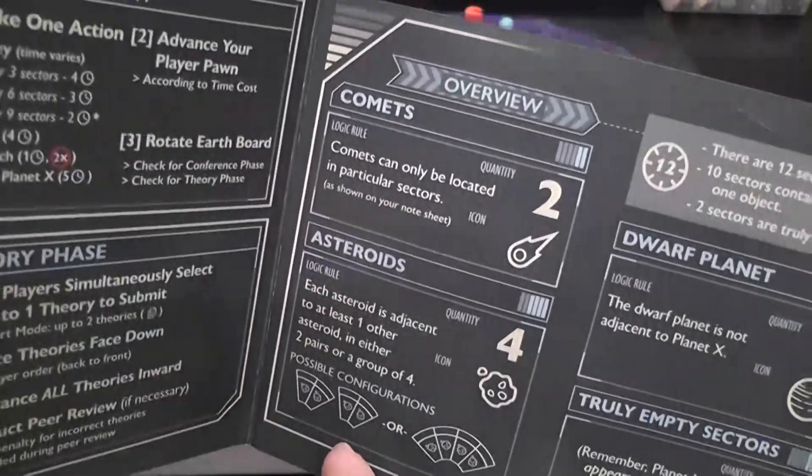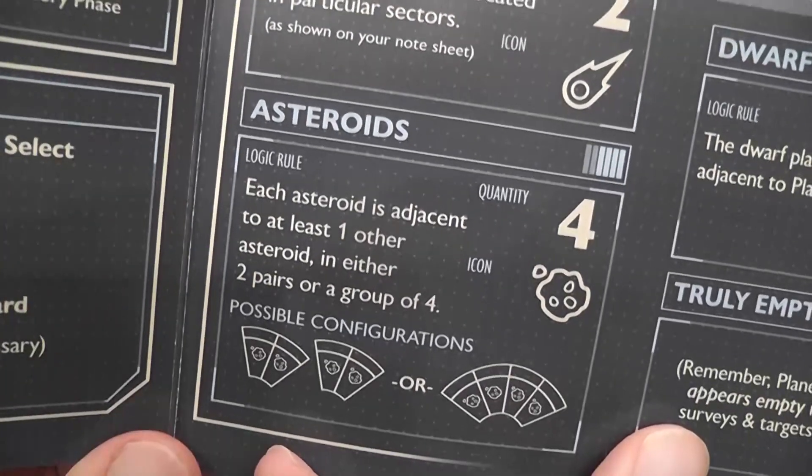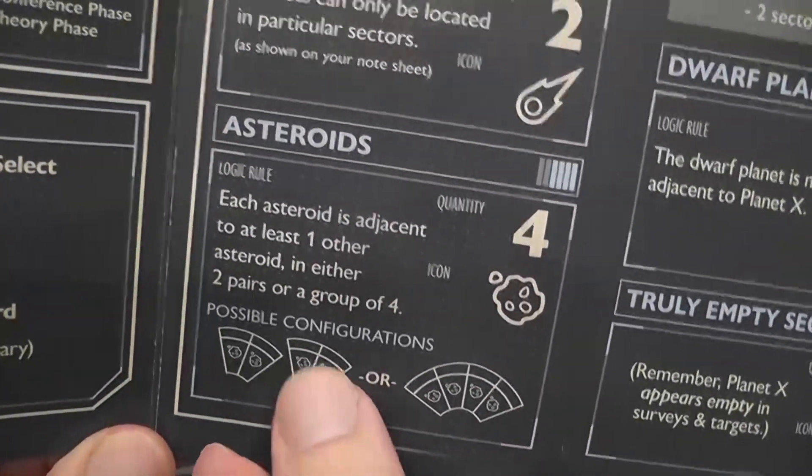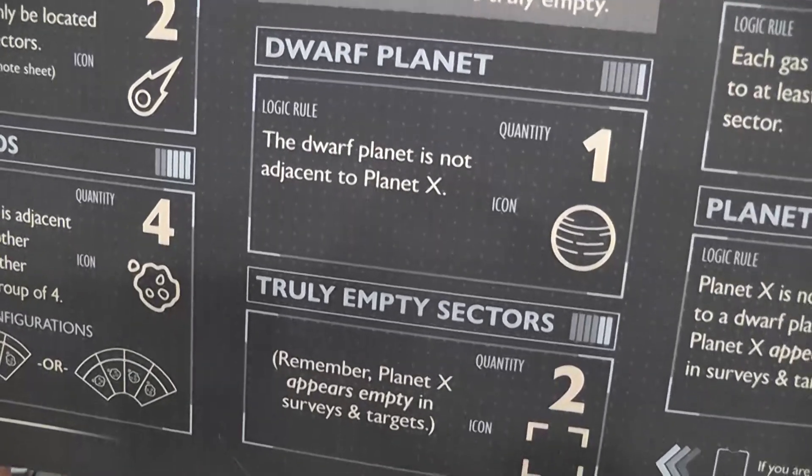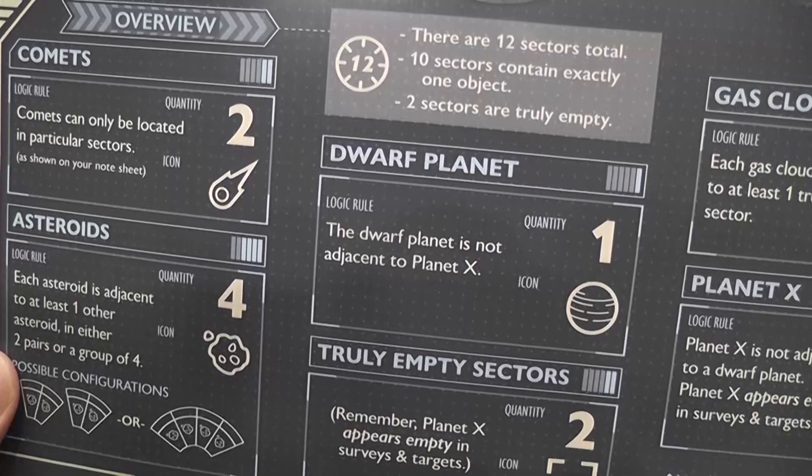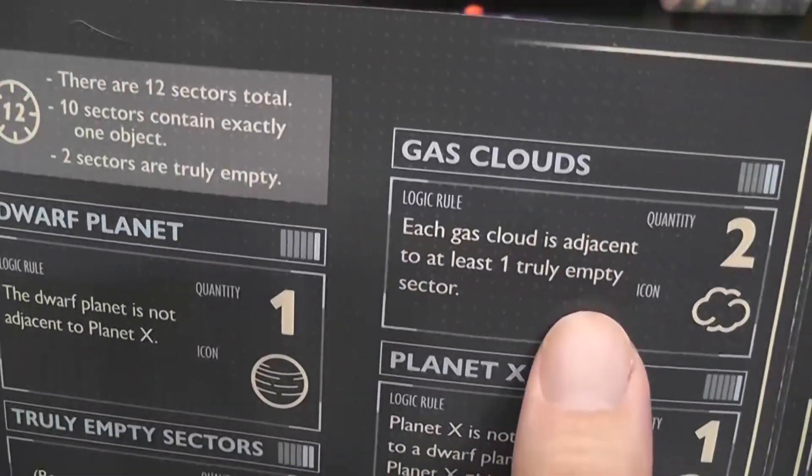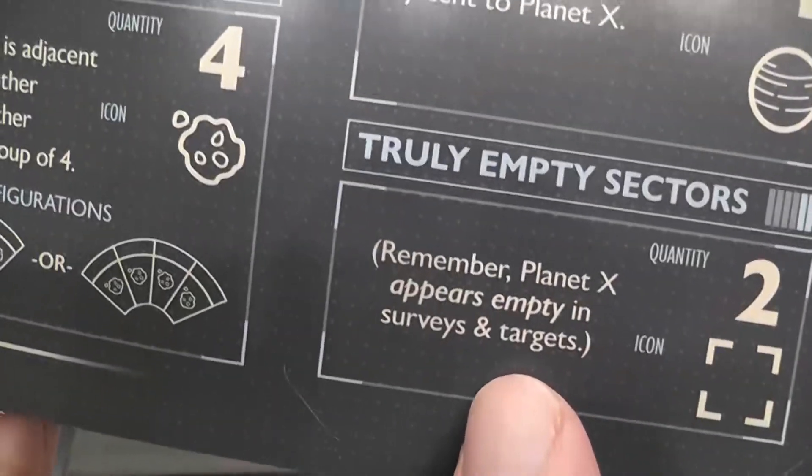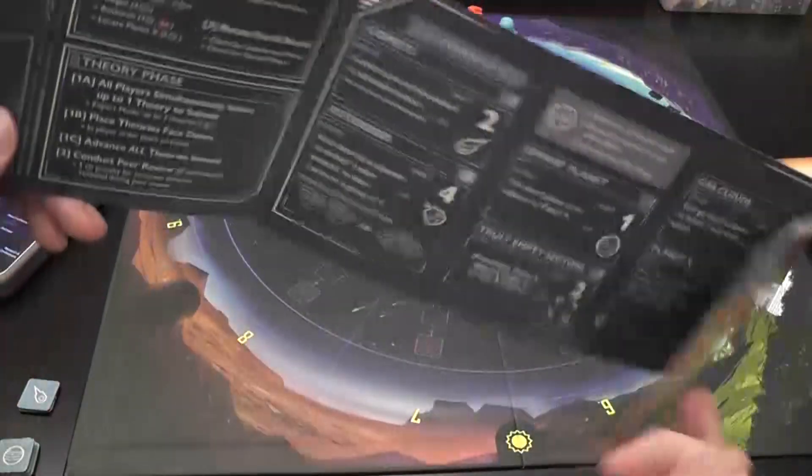Comets, you don't have to scan every sector to figure out what the two comets are. Asteroids, there is always an asteroid field next to another one. Each has at least one asteroid field adjacent. That means that either they are all four next to each other, or there are two groups of two. There is one dwarf planet that is not adjacent to Planet X. Another thing that helps is the gas clouds, because each gas cloud is adjacent to at least one truly empty sector. You use these two things to determine if it really is. And one with Planet X, we are reminded, not adjacent to a dwarf planet and appears empty in most actions that you take.